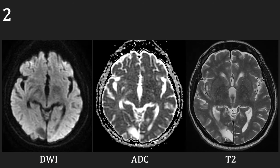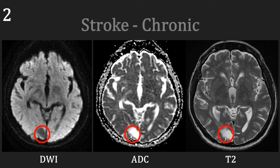In comparison, this is a 66-year-old female patient who is known to have had a previous stroke in 1998. Here, we can see on the DWI, in the right occipital lobe, there is an area of low signal, which is high on the ADC and also high on the T2. This represents a chronic infarct or an old stroke.